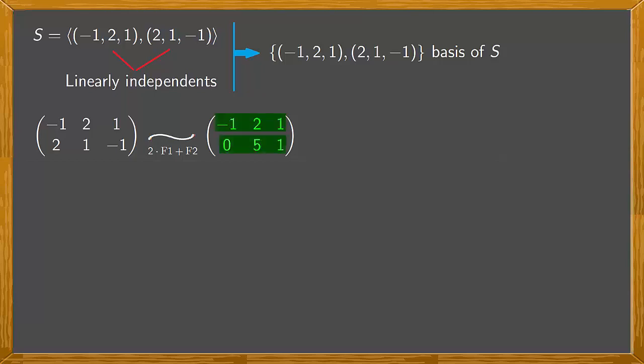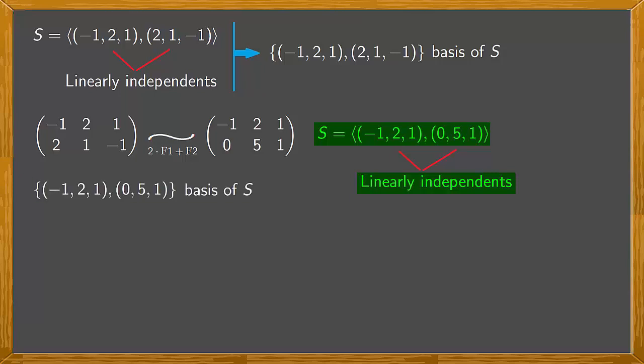So these vectors generate S just the same as the previous vectors did. And notice that they're not proportional therefore they're linearly independent. Thus these vectors constitute a basis of S. And the good thing about this base is that it's simpler and a better way to obtain the Cartesian equations of S. Now let's do that.